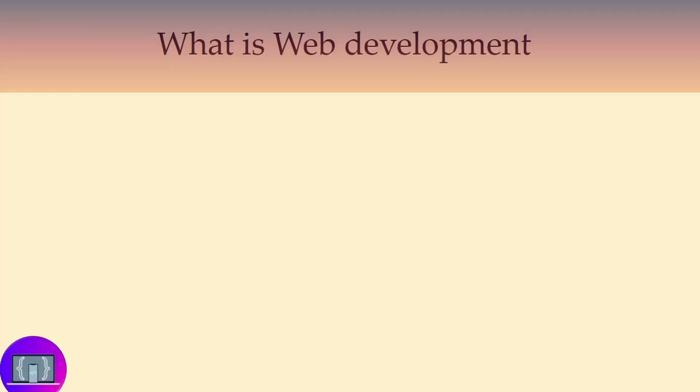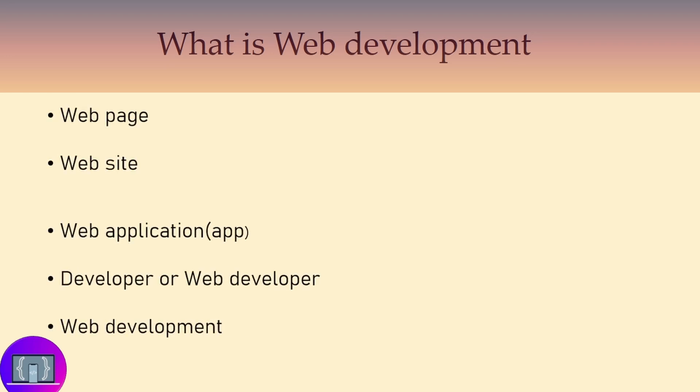So what is web development? To understand what web development is, we need to explain what a web page is, what a website is, what a web application is, and who a developer is. A web page is any single page on the internet with static content. An example is a single blog page with links to no other page on the internet.